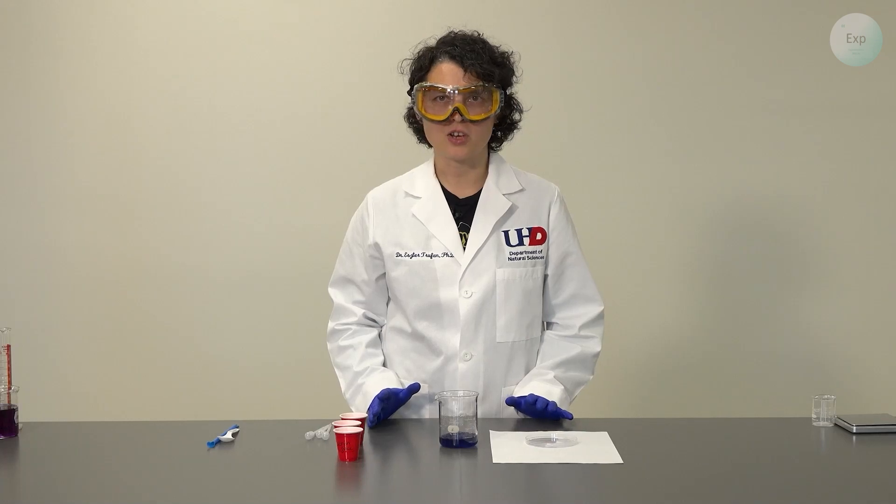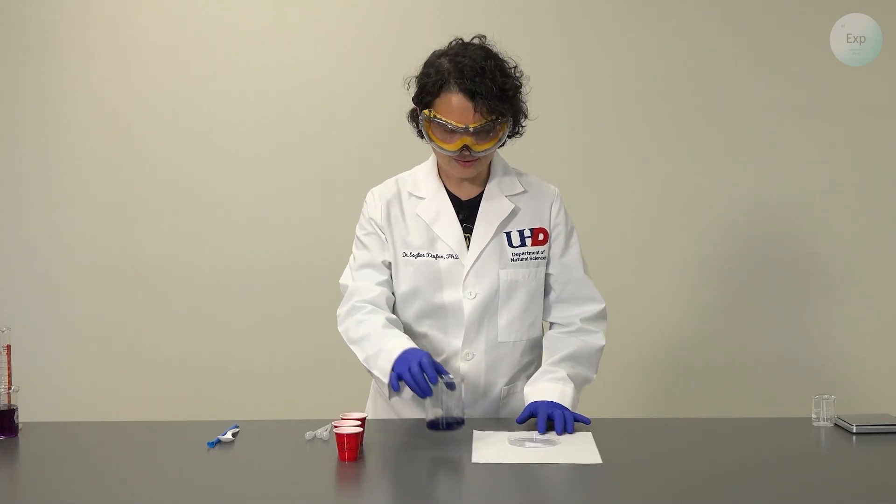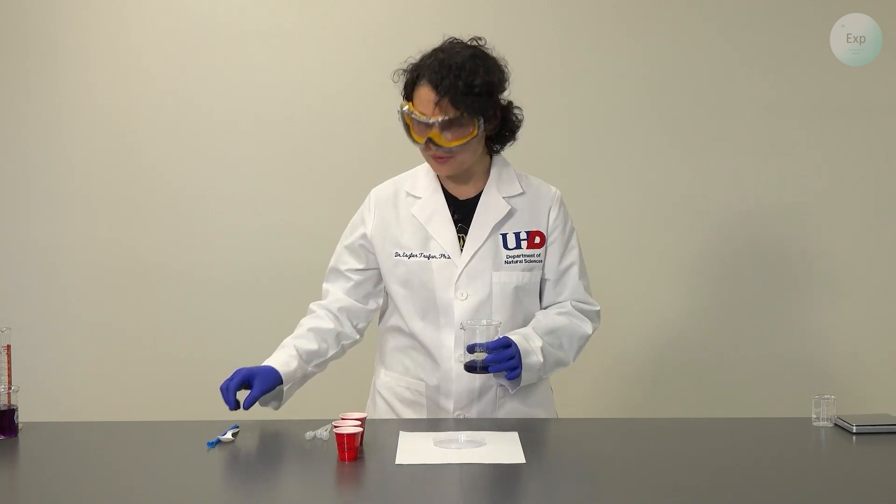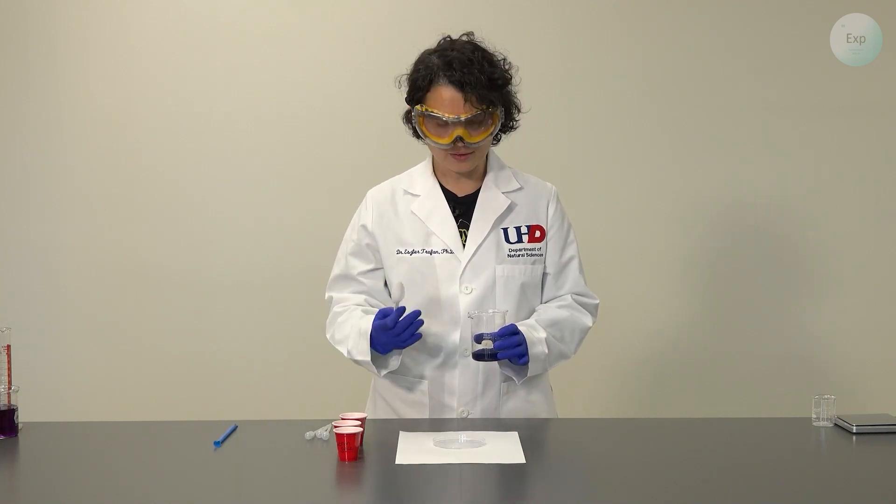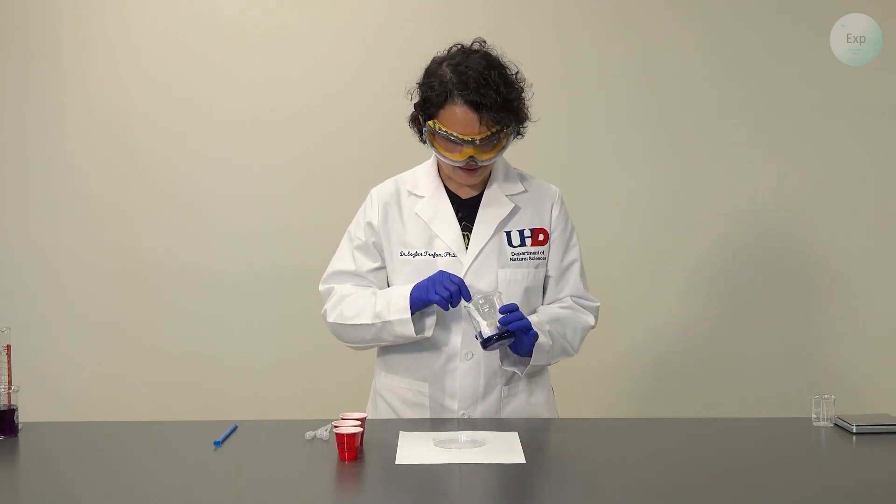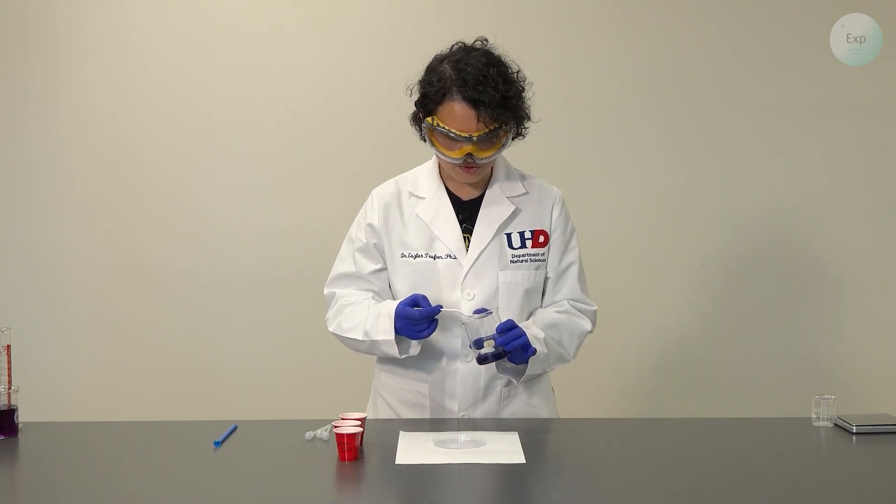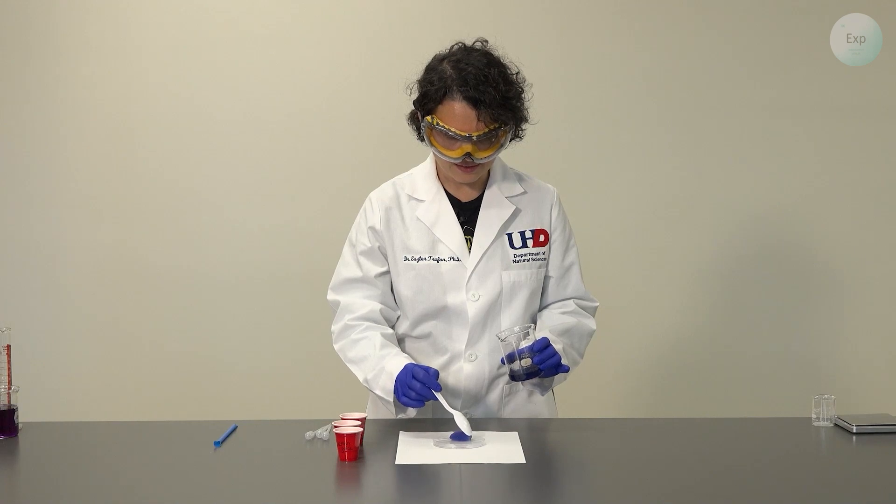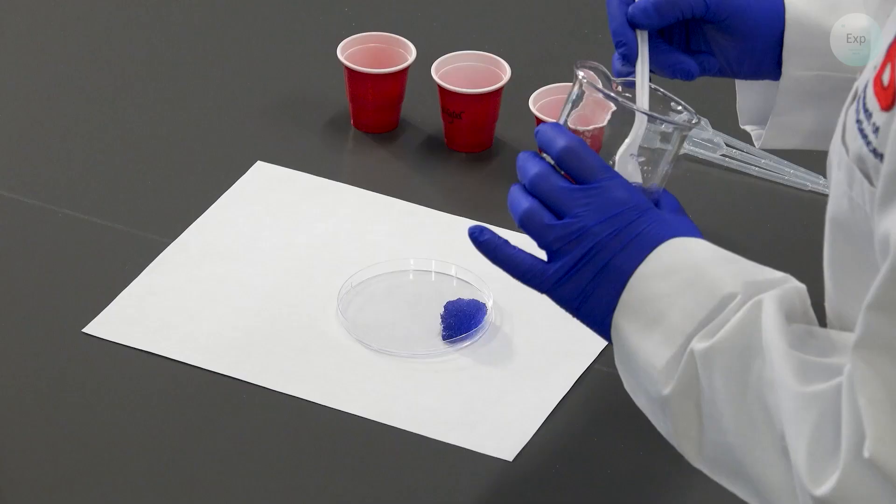Now that we have a fairly solid gel, we're going to place our petri dish on the white piece of paper. This will allow us to see what color we're observing. And then either using a spoon or a spatula, we will transfer three mounds of the indicator separated from each other.